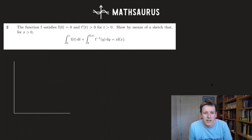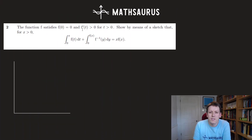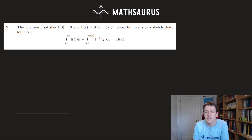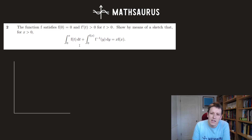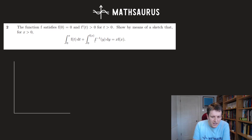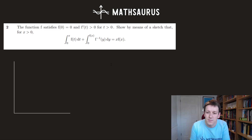In the first part, the function f satisfies f(0)=0, and f'(t) is greater than 0 for all t greater than 0. We want to show by means of a sketch that when x is greater than 0, the integral from 0 to x of f(t) dt, plus the integral from 0 to f(x) of f⁻¹(y) dy, is equal to x times f(x).